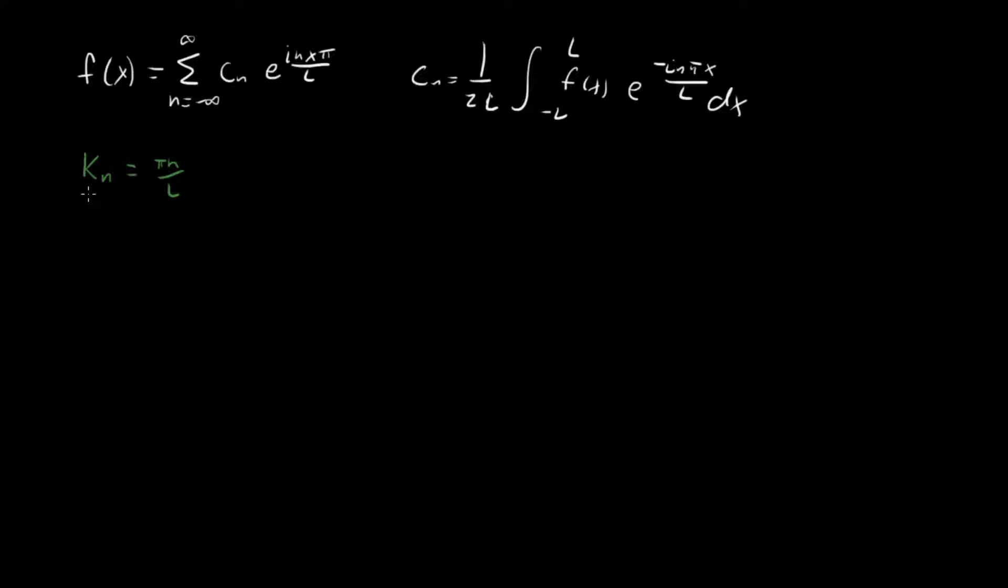And one thing to note is that these kns define a grid, and so we're summing over n's that are going from minus infinity to infinity. And so these kns that I've just defined really describe a grid that goes everywhere, or that sort of spans in all directions here, with a delta k that's given by pi over l. And so we've defined this grid, which in the limit where l becomes very large, the spacing between these grid points becomes arbitrarily small.